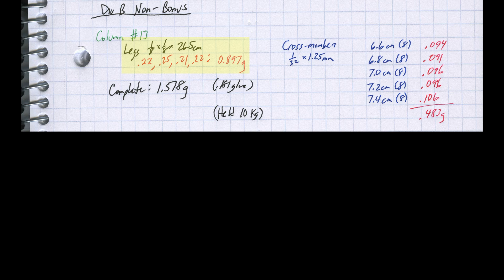Around 0.22 grams for each leg. In my previous columns, legs that were that light sometimes held 15 kilograms, but they also sometimes failed quite early. I knew I needed to make a very light tower, so I rolled the dice and used these light legs. For the cross-members, I used fairly light 1/32 inch thick balsa sheet and cut the strips to 1.25 millimeters. You can see the mass of each layer here in red for a final total cross-member weight of 0.483 grams.